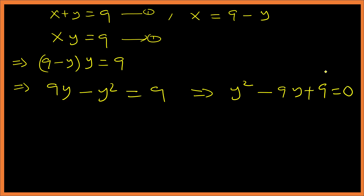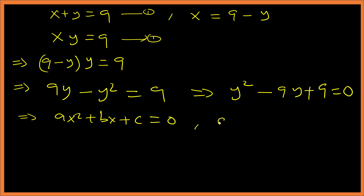So Y squared minus 9Y plus 9 equals 0. This is a quadratic equation. Comparing with the general quadratic formula ax squared plus bx plus c equals 0, my a equals 1, b equals negative 9.